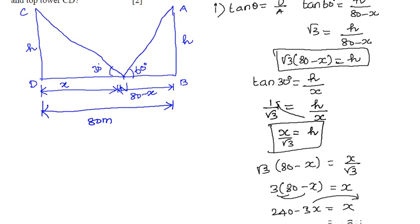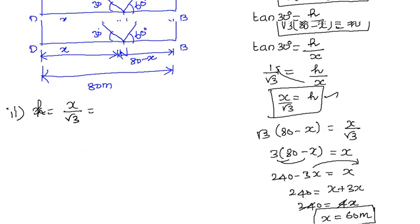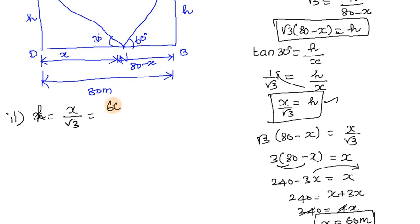Height equals x divided by √3, so x is 60. This is 60 divided by √3, which equals 60√3 by 3, which equals 20√3 meters. So this is 20√3 meters.